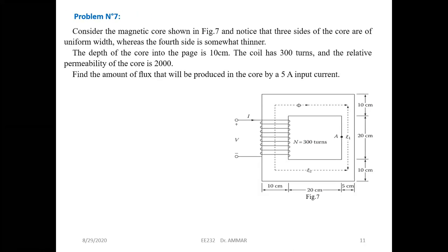Let's solve exercise number seven and talk about such points. Consider the magnetic core shown in figure seven. Notice that three sides of the core have uniform width — this side, this side, and this side have the same cross-section — while the fourth side has a different width.